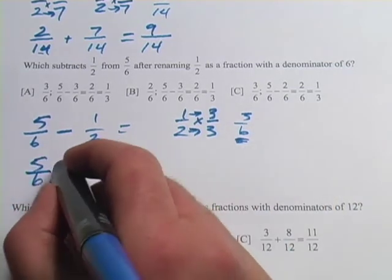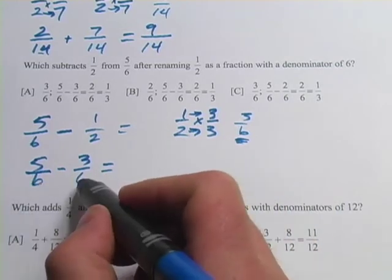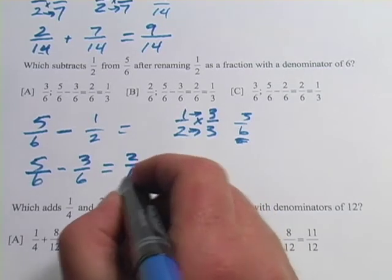So we can substitute that in. 5/6 minus 3/6 equals, well, let's see, now that our denominations are the same, we can just do the subtraction across the top. 5 minus 3 is 2/6.